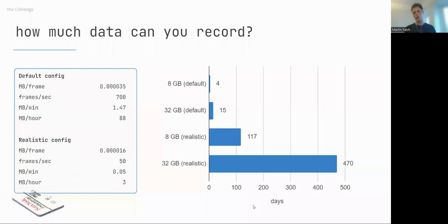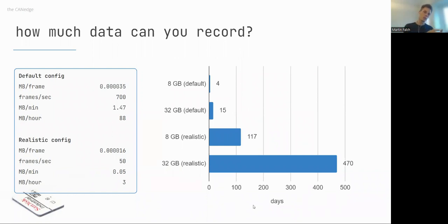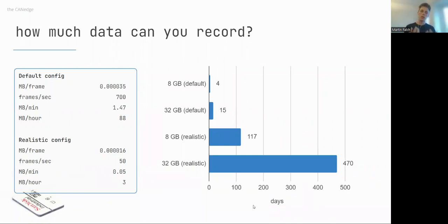A frequently asked question: how much data can you record? On an 8 GB SD card, recording all data from a normal truck at around 700 frames per second, you can typically record for four days straight. On a 32 GB card, that's 15 days of 24/7 logging. When the card is full, the device automatically deletes the oldest data to maintain a rolling window. In practice, by filtering out unnecessary parameters, you can realistically log for 100 to even 500 days.